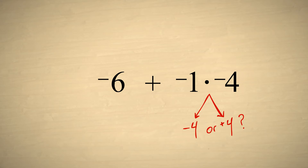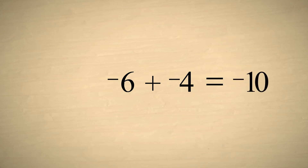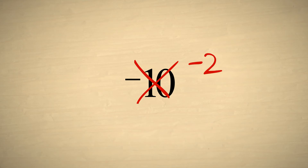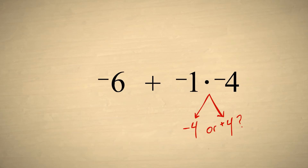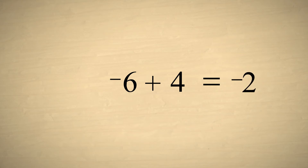Let's try both possibilities and see which one gives us the correct answer. If we assume that multiplying two negative numbers results in a negative product, then we end up adding negative 4 to negative 6, which equals negative 10. But the answer should be negative 2, so this is not correct. The other possibility is that multiplying two negative numbers gives a positive result. In that case, negative 1 times negative 4 would be positive 4. We then add positive 4 to negative 6, which gives us negative 2, the correct answer.